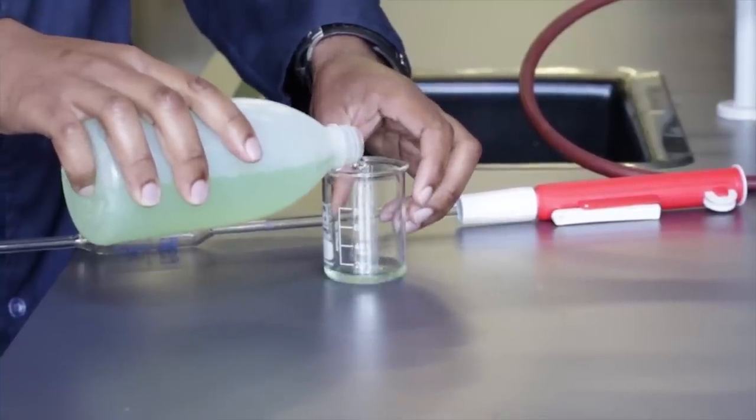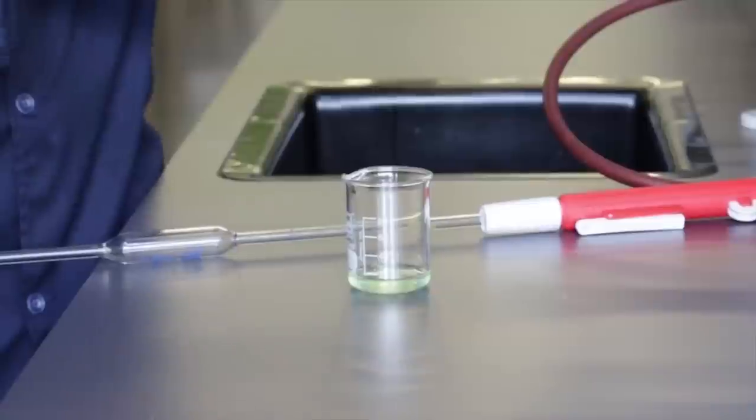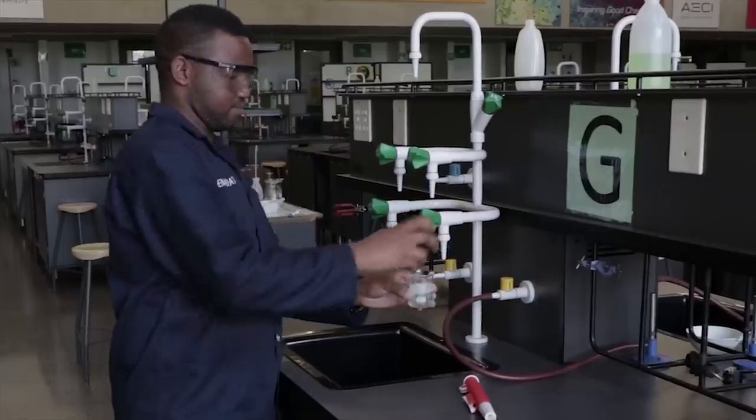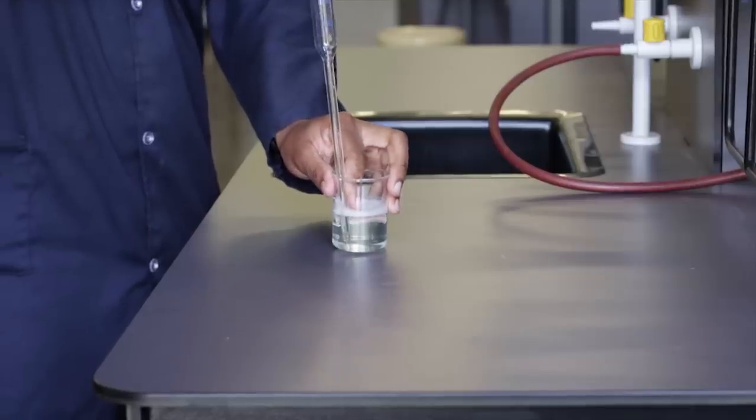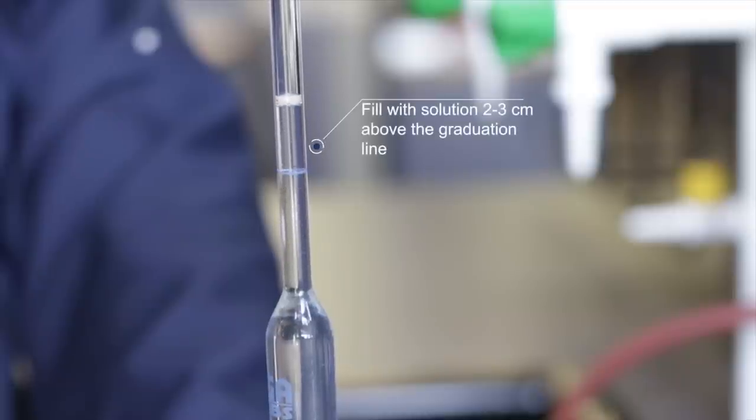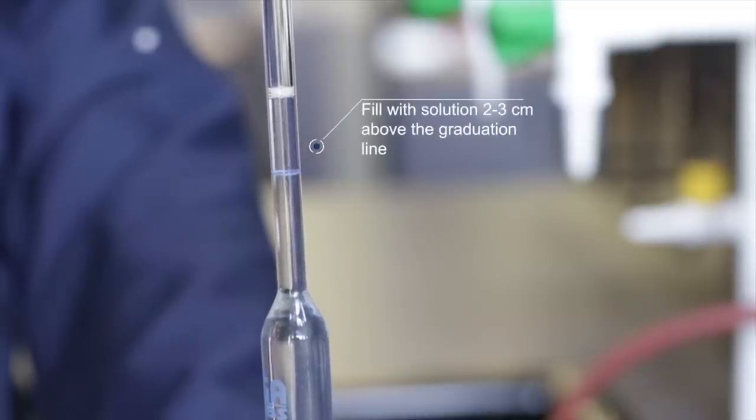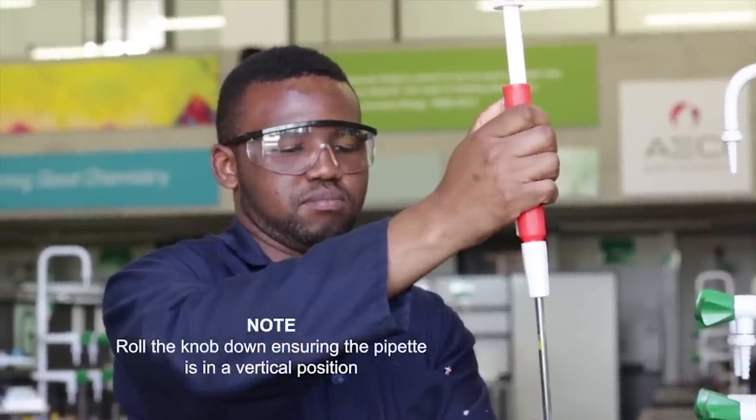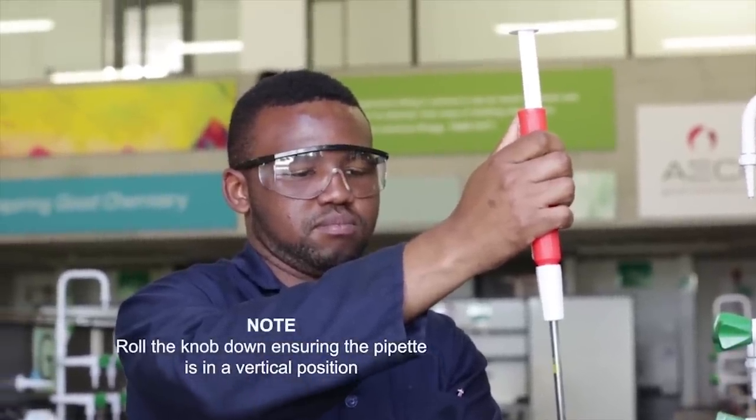Approximately 10ml of cleaning solution is added into a beaker where the solution is diluted with water. The pipette is then cleaned by sucking up the diluted cleaning solution approximately 2 to 3cm above the graduation line by rolling the knob downwards, making sure the pipette is in a vertical position.